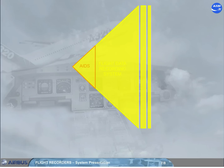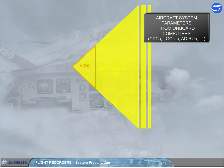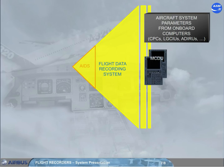The aircraft integrated data system monitors various aircraft system parameters transmitted by all onboard computers through the flight data recording system, which acts as an interface unit. The AIDS generates system reports in order to make maintenance easier by means of pre-programmed reports from or selected on the MCDU.